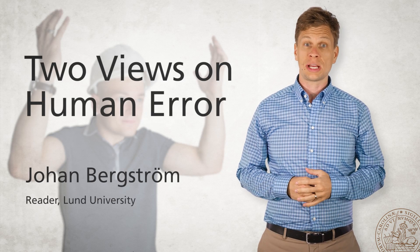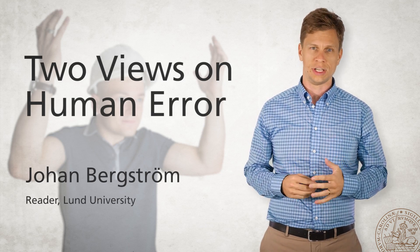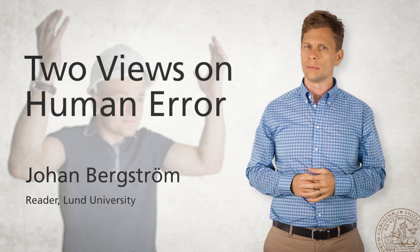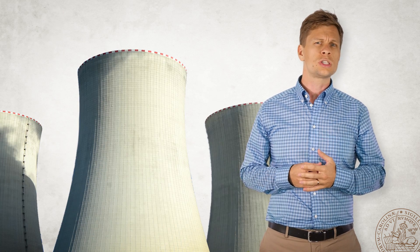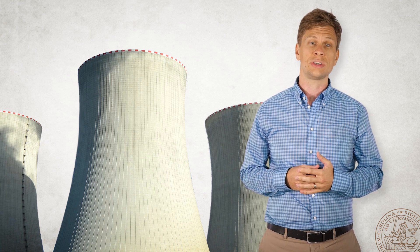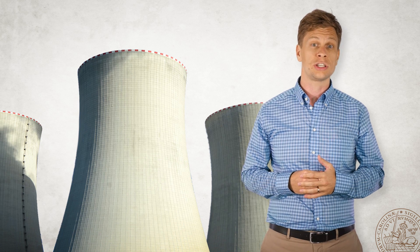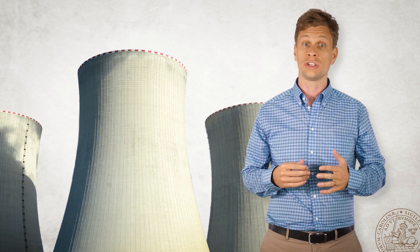Human error is often mentioned as a causal factor in accidents in a variety of industries. But what do we mean by human error? Even though the notion of human error has been around since the beginning of the 1900s, when they talked about accident-prone people or unsafe acts of workers, it was not until the Three Mile Island nuclear meltdown accident in 1979 that it really became a target of scientific study and intervention in the broader safety sciences.